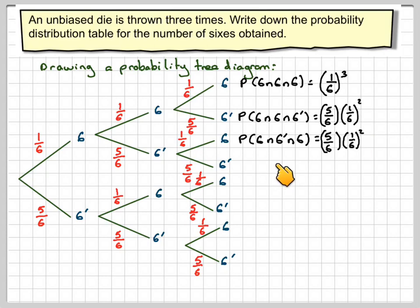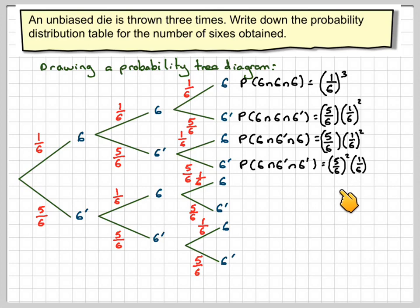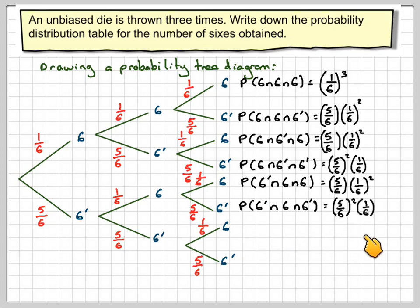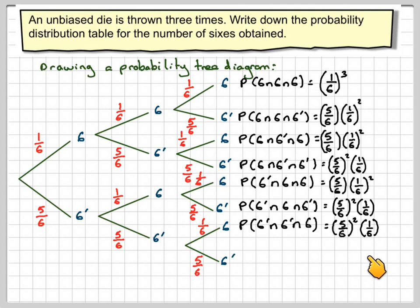A six, not a six, and a six is five-sixths times one-sixth squared. The probability of a six, not a six, and not a six is five-sixths squared times one-sixth. The probability of not a six, a six, and a six is five-sixths times one-sixth squared. Not a six, a six, and not a six is five-sixths squared times one-sixth. Not a six, not a six, and a six is five-sixths squared times one-sixth. And the probability of no sixes on all three is five-sixths cubed.